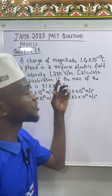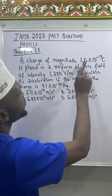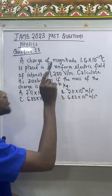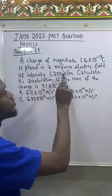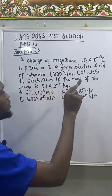Question 23, JAMB 2023 past question physics. A charge of magnitude 1.6 times 10 raised power minus 19 coulomb is placed in a uniform electric field of intensity 1200 volts per meter. Calculate its acceleration if the mass of the charge is 9.1 times 10 raised power minus 31 kilogram.